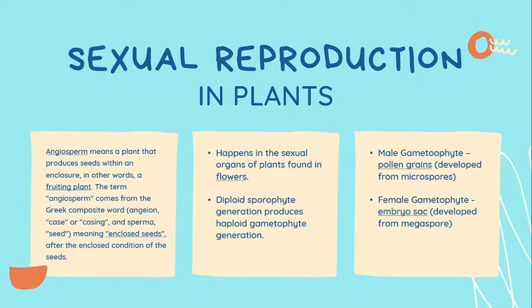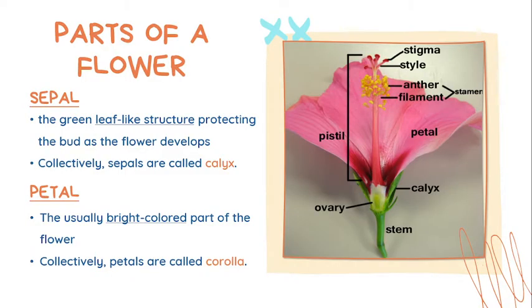You'll be seeing a more detailed view of this on our next slide. To understand this better, let us first familiarize ourselves with the parts of a flower. I have a picture for you. Can you guess what flower this is? I bet most of you have this in your homes. This flower is the gumamela flower, or the hibiscus. This flower is considered as the perfect flower because it has both the male and female parts in a single flower.